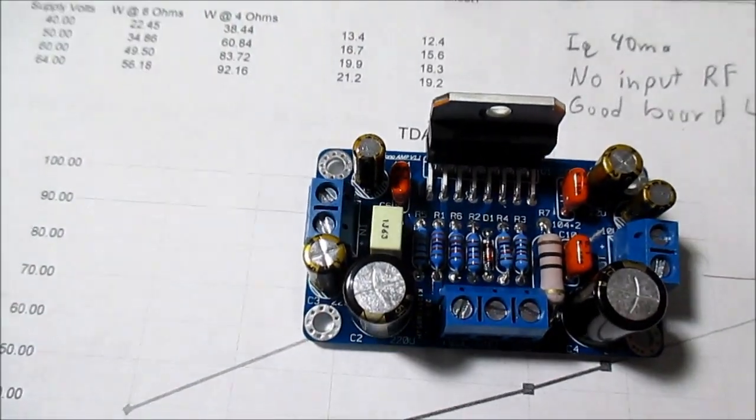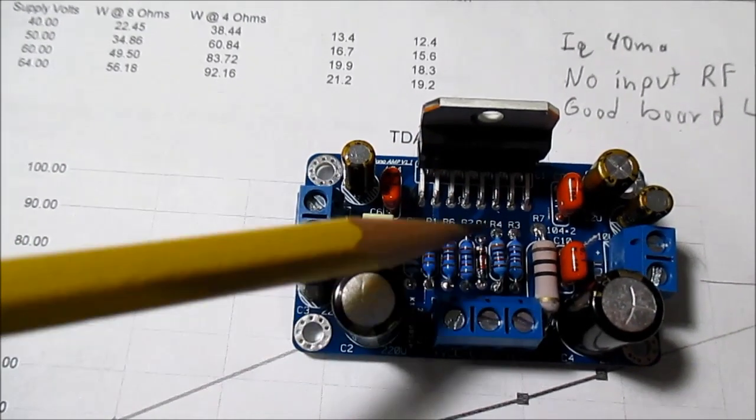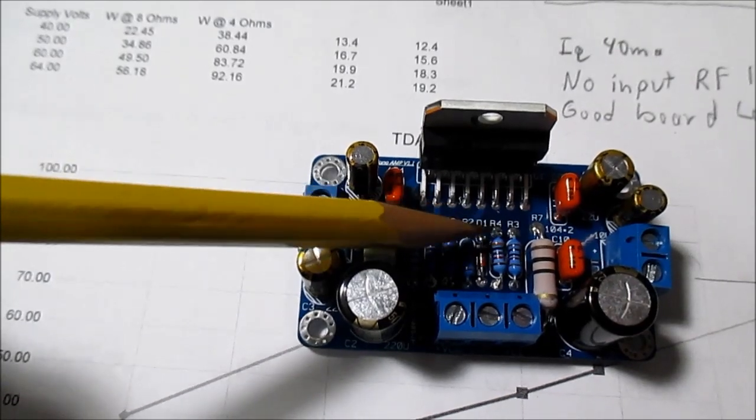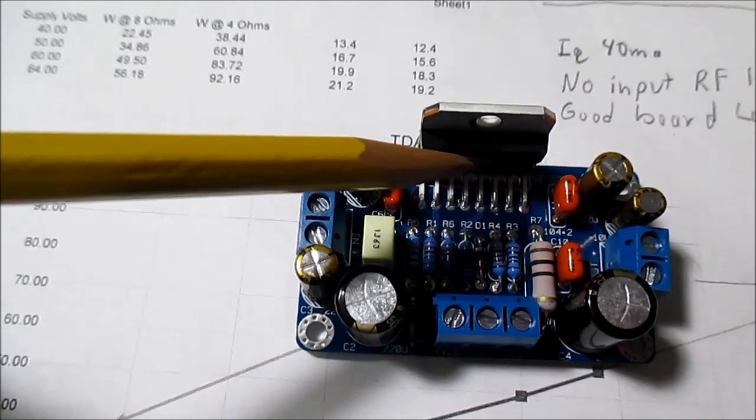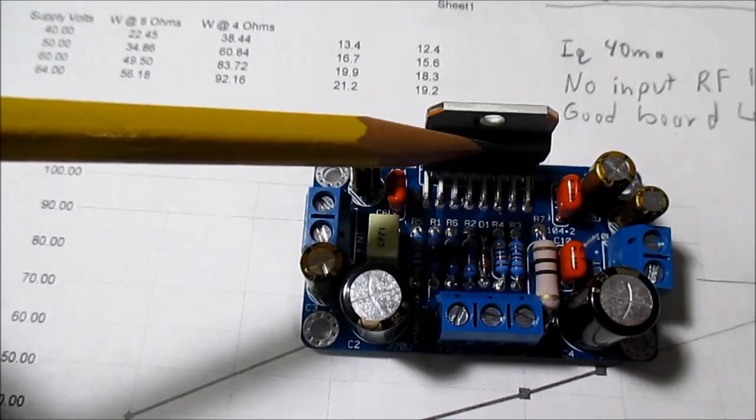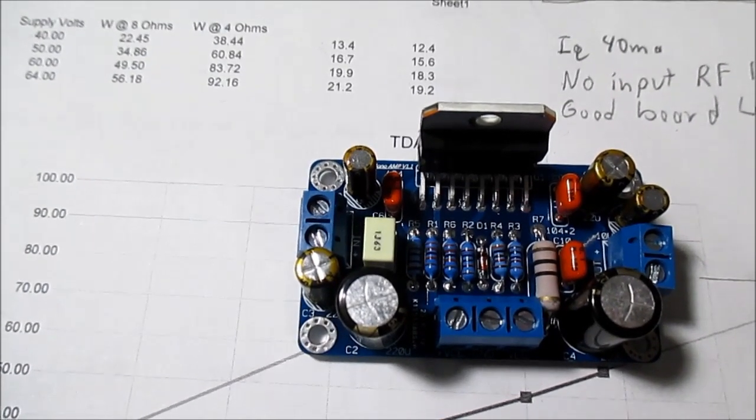Now I didn't check all the component values and everything against the data sheet, but as far as the ground layout they seem to have separated the signal small signal and power grounds very good. It's a nice compact small board, you are going to need a decent size heat sink because of the power this thing can make. Seems to have authentic components. I did check the wire trimmings from the resistors, it is copper core and the chip does seem to be authentic. And the fake ones they use smaller die and there's no way I'd get that kind of power, so this thing is excellent.